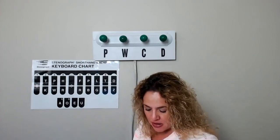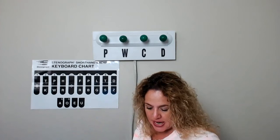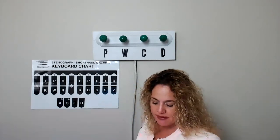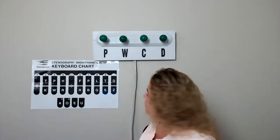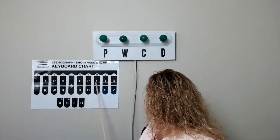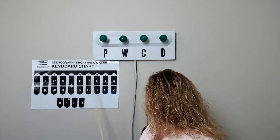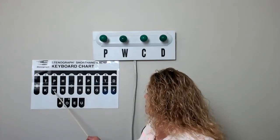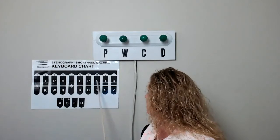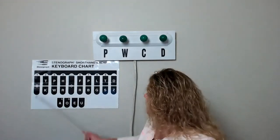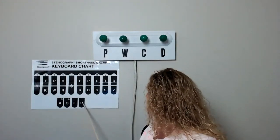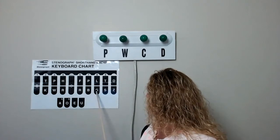Number nine, the brief well: initial W, final L. We don't write it as W-E-L — that would be 'we will.' And number ten, tick: T, short I, final K.